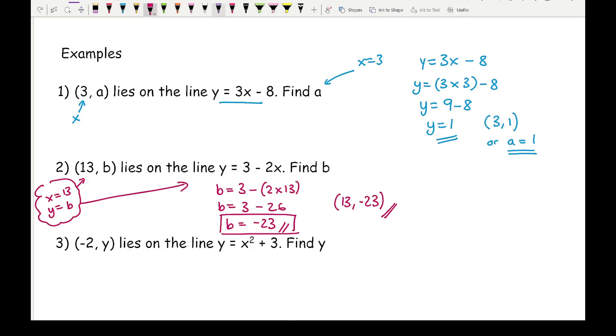Moving on to our next example, we know that (-2, y) lies on the line y equals x squared plus 3. Find the value of y. For this we've got x equals minus 2 and y equals y. I'm just going to substitute that into the equation. So from this I've got y equals minus 2 squared plus 3.